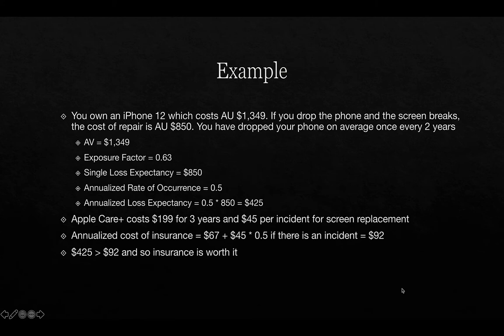Let's take an example. You own an iPhone 12 which costs $1,349. If you drop the phone and the screen breaks, the cost of repair is around $850 — assuming you don't have any insurance. Let's say you've dropped the phone on average once every two years. The cost of the asset is $1,349, the exposure factor if you crack the screen is 0.63, which is basically the percentage you'd have to pay to get it repaired. The single loss expectancy is therefore $850, and the annualized rate of occurrence is 0.5 — once every two years.